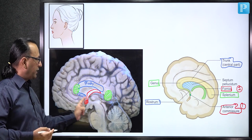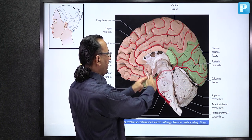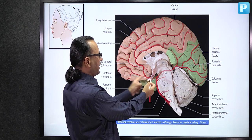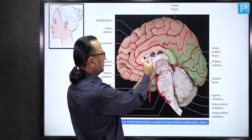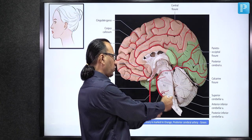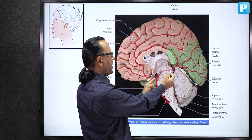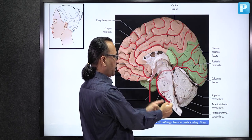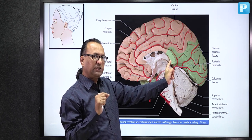Reviewing arterial supply: internal carotid artery gives anterior and middle cerebral arteries; two vertebral arteries form the basilar artery, which gives the posterior cerebral artery. The posterior cerebral artery supplies the posterior cerebrum and splenium of corpus callosum via the posterior pericallosal artery. Blockage in the vertebrobasilar system or posterior cerebral artery compromises the splenium, causing dyslexia without agraphia.